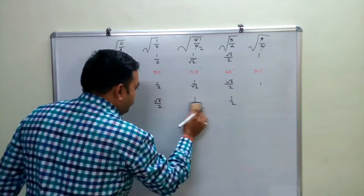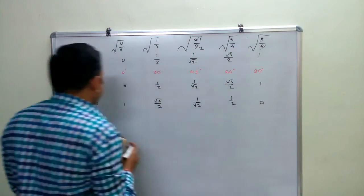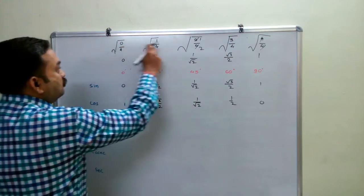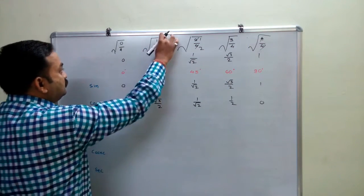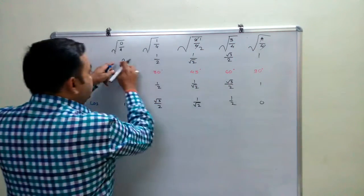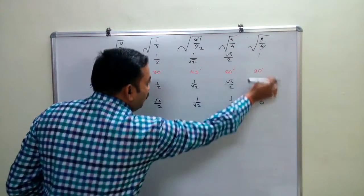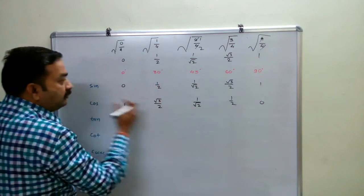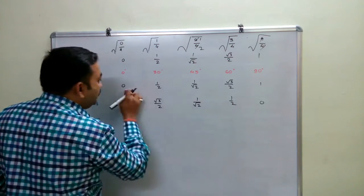So to recap: first we wrote 0, 1, 2, 3, 4. Then we divided by 4. Then we put the square root. This gives 0, 1/2, 1/√2, √3/2, and 1 — and this same line is written for sin. And for cos, we write that same line in reverse order.